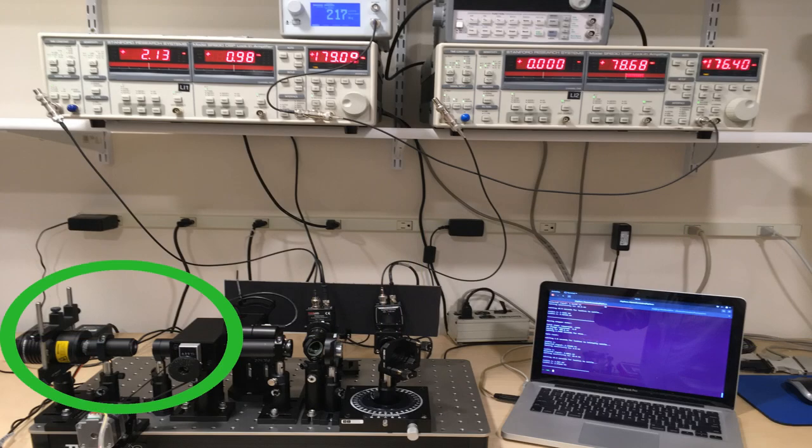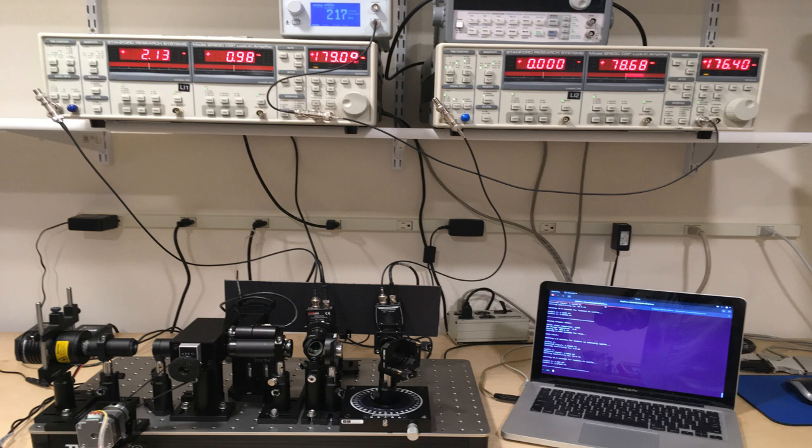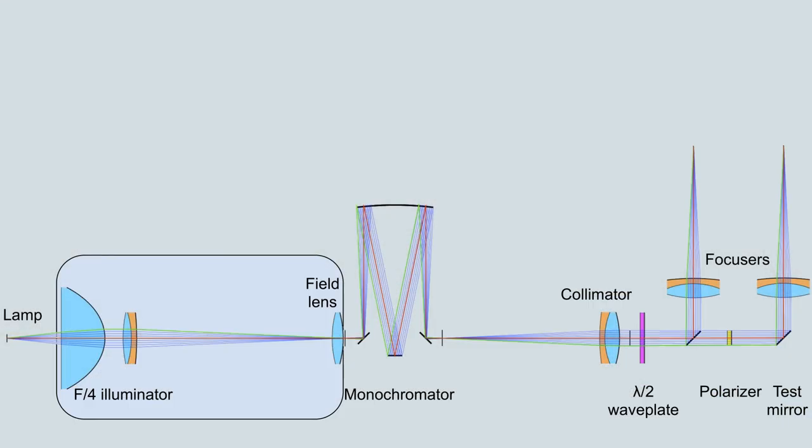A tungsten lamp is used to illuminate the input slit of a monochromator, which chooses the wavelength to be measured. The illumination assembly consists of a condensing lens, focusing lens, and field lens.